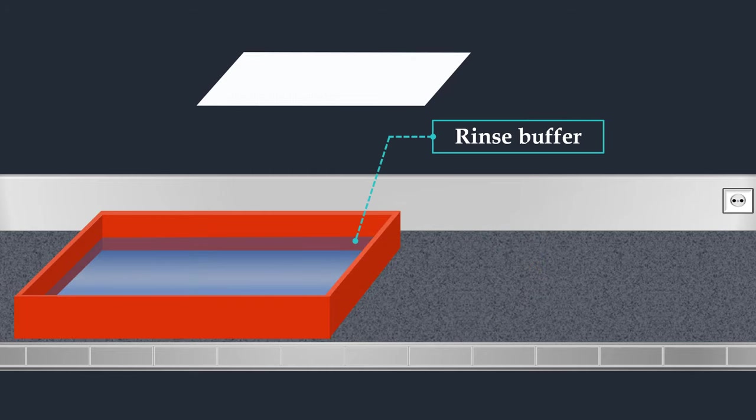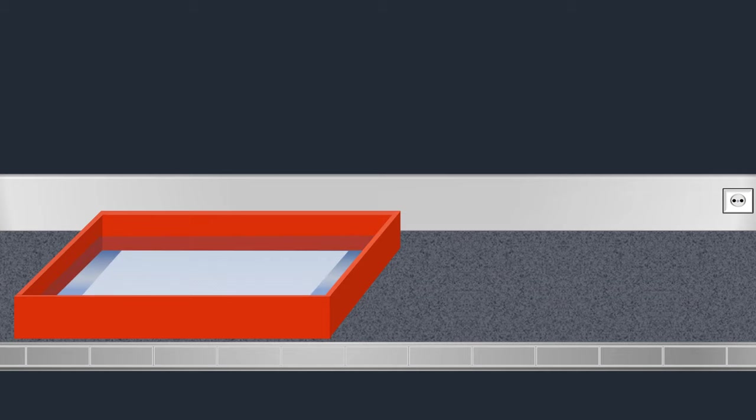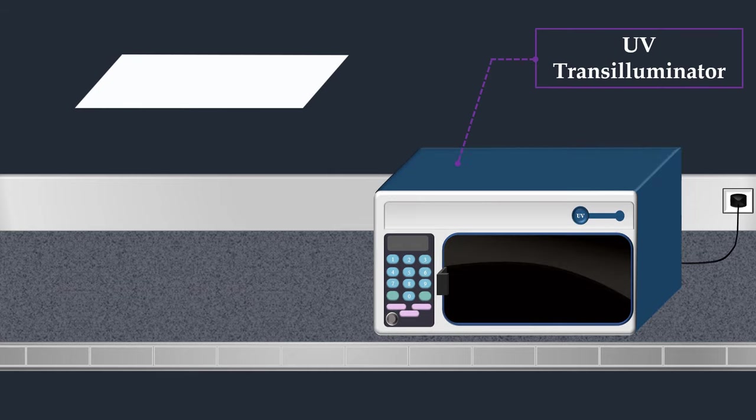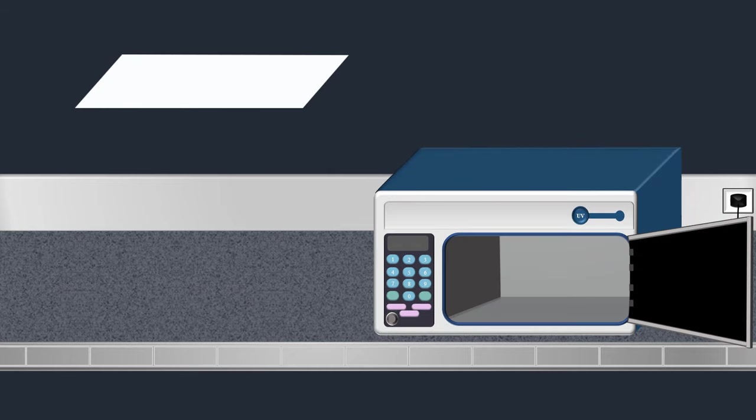Next, the membrane is briefly rinsed to remove any agarose that may be stuck during the transfer. Then it is exposed to ultraviolet radiation to permanently attach the transferred DNA to the membrane.